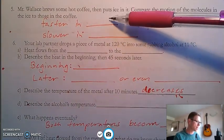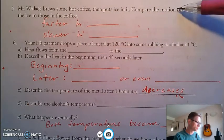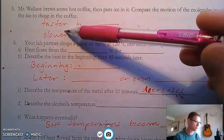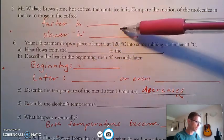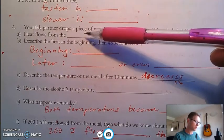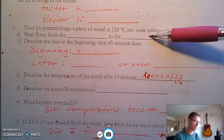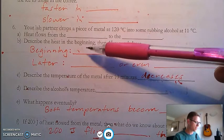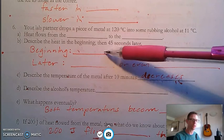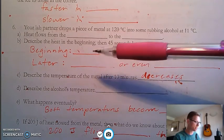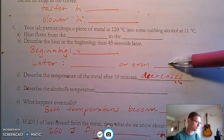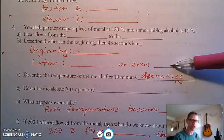The hot coffee, the molecules, the motion of the molecules, motion of molecules is faster in the hot coffee. Motion of molecules is slower in the ice cube. Metal. Heat obviously flows from the metal to the rubbing alcohol. In the beginning, we're describing the rate. It is flowing really fast. And in the end, it is flowing really slow after 45 seconds, or it might even stop.